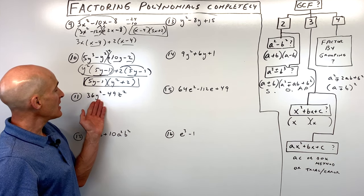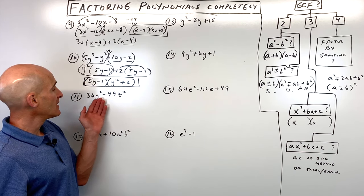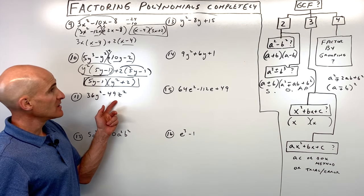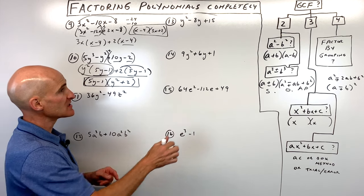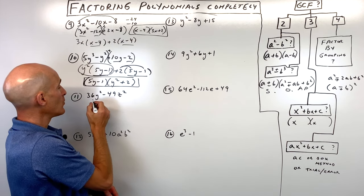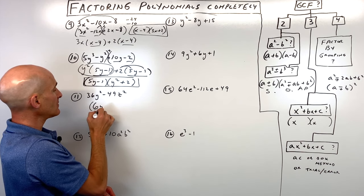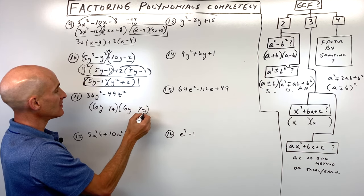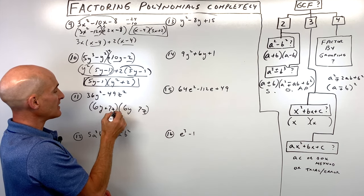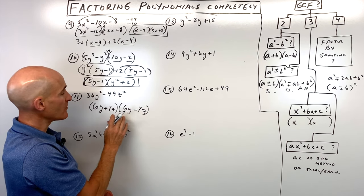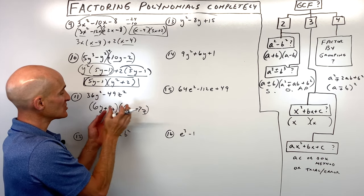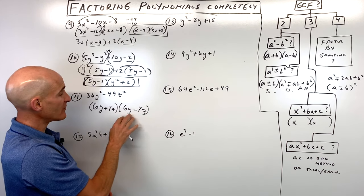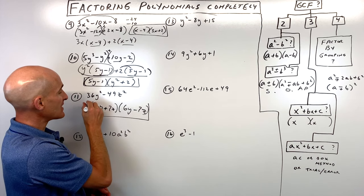Number eleven, it doesn't look like there's a greatest common factor, and we have two terms with a minus sign. Is it a difference of two squares? This is a perfect square — that's 6y — and this is also a perfect square — that's 7z. Since it's a difference, we get the sum and difference pattern: 6y plus 7z times 6y minus 7z. We can't factor further, so that's our final result.